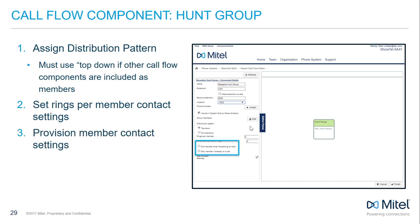The Call Member When Forwarding All Calls checkbox can be misleading. If checked, hunt group calls override the Do Not Disturb availability for hunt group members, ringing their phones even if they've set it to Do Not Disturb. Skip Member If Already On Call, on the other hand, will skip any member who is already active in any type of phone call, both internal and external.